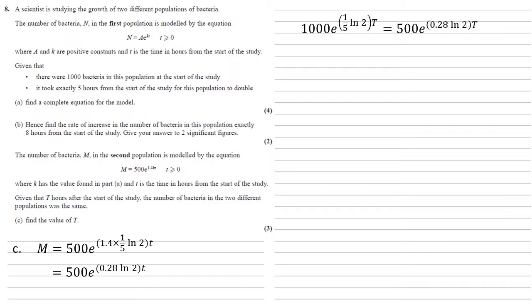We're going to do some cross division now, so dividing both sides by 500 and both sides by the e to the fifth log natural 2 t, we get that e 0.28 log natural 2 t all over e to the fifth log natural 2 t is equal to 1000 over 500. The left hand side is two powers of e, so by our rules of powers that becomes e to the top power, the 0.28 log natural 2 t minus the bottom one, fifth log natural 2 t, and the right hand side, 1000 divided by 500 is 2.